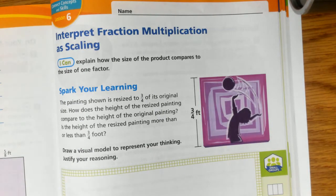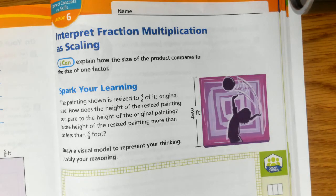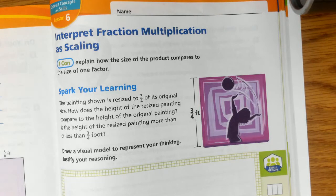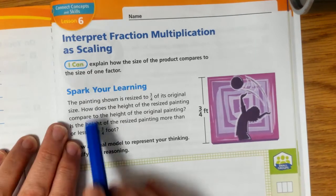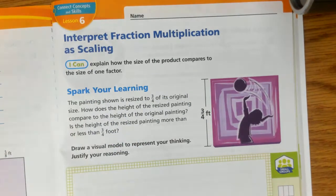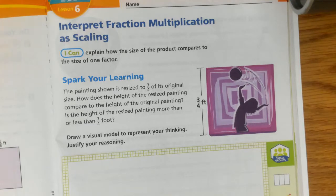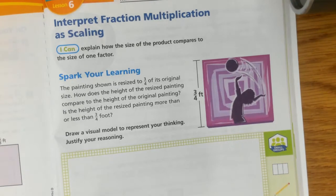We're going to complete module eight this week — lesson six and lesson seven. This video is for module eight, lesson six. We're going to be interpreting fraction multiplication as scaling. Scaling is when they talk about how the size of one item compares to the size of one of the factors in the fraction you're using. You'll be able to explain how the size of the product compares to the size of one factor — basically how one thing compares to the other using fractions.